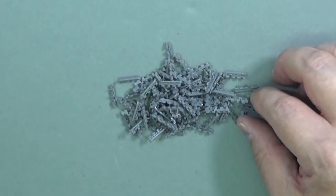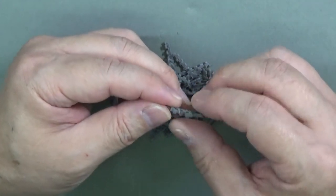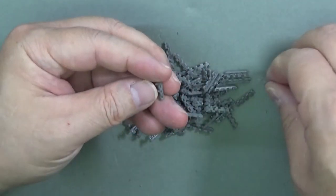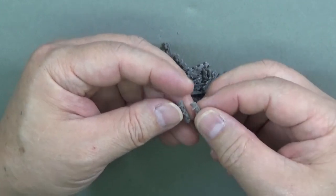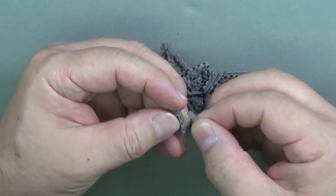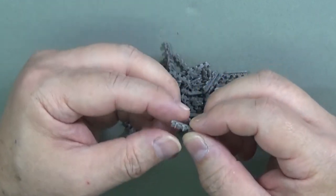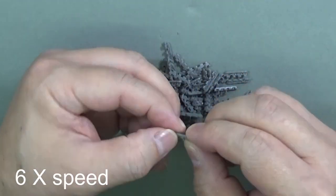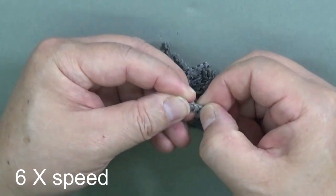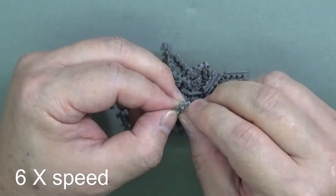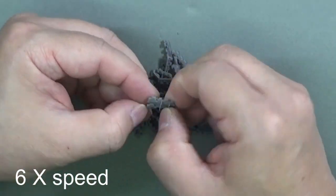And then I start assembling the track links. I clean up any leftover from the support gates simply using my finger. And in the beginning, I find it difficult to click the links together.